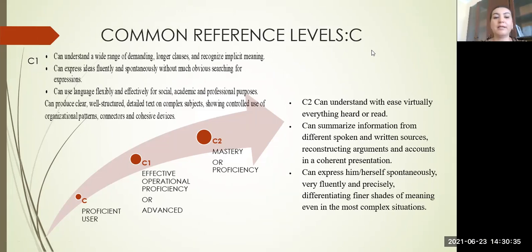C1 is called a proficient user. C1 language learner can understand a wide range of demanding longer texts and recognize implicit meaning, can express ideas fluently and spontaneously without much searching for expressions. Can use language flexibly and effectively for social, academic, and professional purposes. Can produce clear, well-structured, detailed text on complex subjects, showing controlled use of organizational patterns, connectors, and cohesive devices.